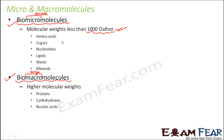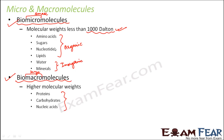Under micromolecules fall amino acids, sugars, nucleotides, lipids, water, and minerals. The first four are organic micromolecules; water and minerals are inorganic micromolecules — organic meaning anything with carbon, inorganic meaning anything without carbon. Under macromolecules are proteins, carbohydrates, and nucleic acids. Macromolecules have a comparatively more complex structure compared to micromolecules, because macromolecules are formed from micromolecules — when many micromolecules come together, they form a macromolecule.